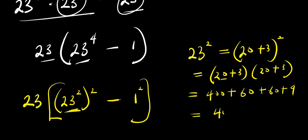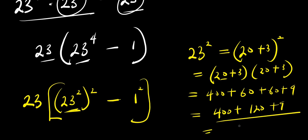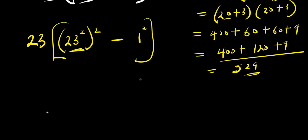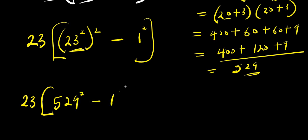So this gives me 400 plus 120 plus 9. If you add up, 120 plus 9 is 129, and 400 plus 129 is 529. That means 23 to the power 2 is 529. So I come over here and I have 23 times 529 squared minus 1 squared.